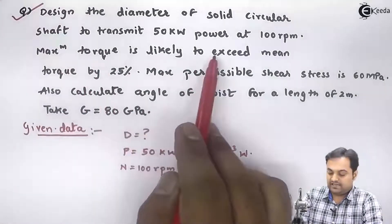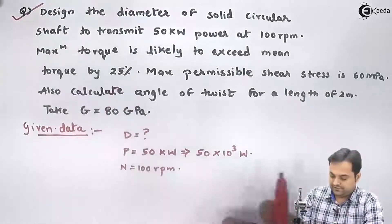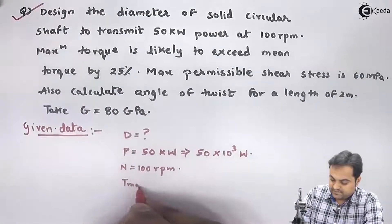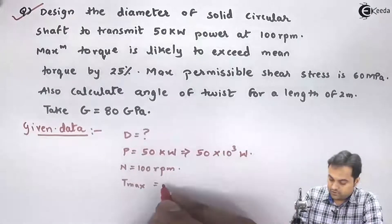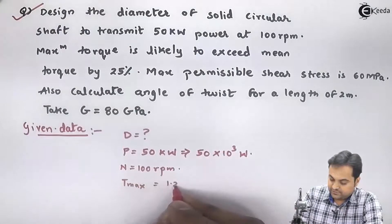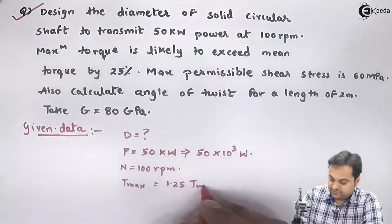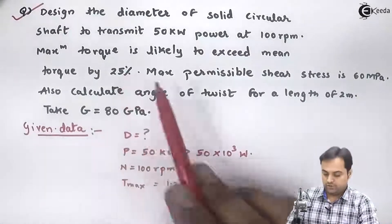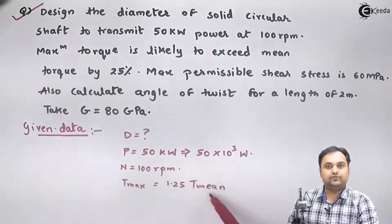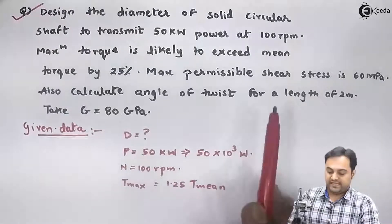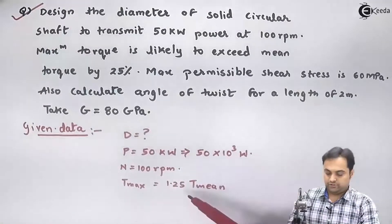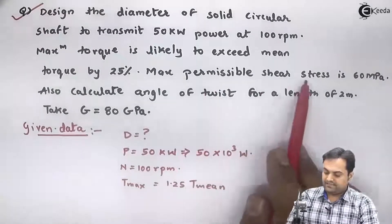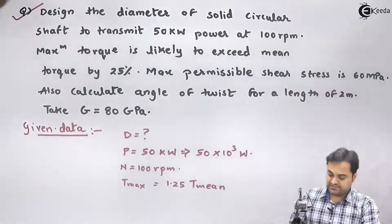Maximum torque is likely to exceed mean torque by 25 percent, so the relation is: T_max equals 1.25 times T_mean. If the question had mentioned 30 percent more, it would have been 1.3 times T_mean.